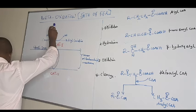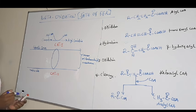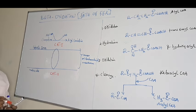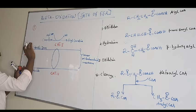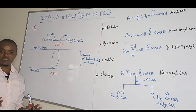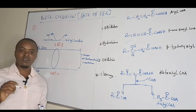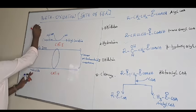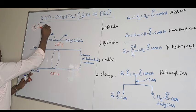In beta oxidation, the first step we talk about is free fatty acid activation. This is the first step — how to utilize free fatty acids in the body. We need to first activate free fatty acids, and that process is what we call fatty acid activation.